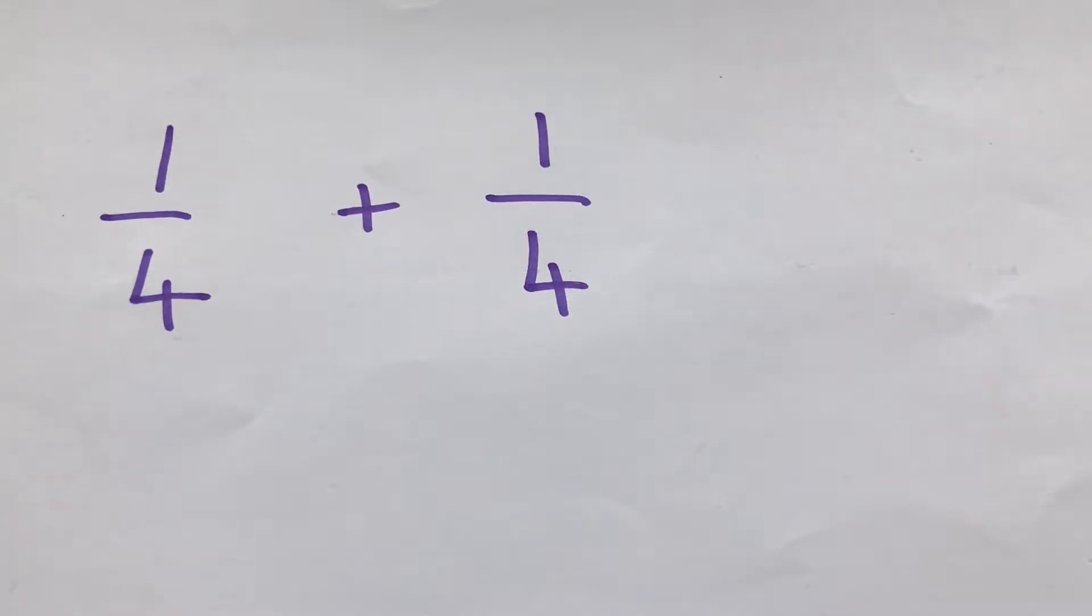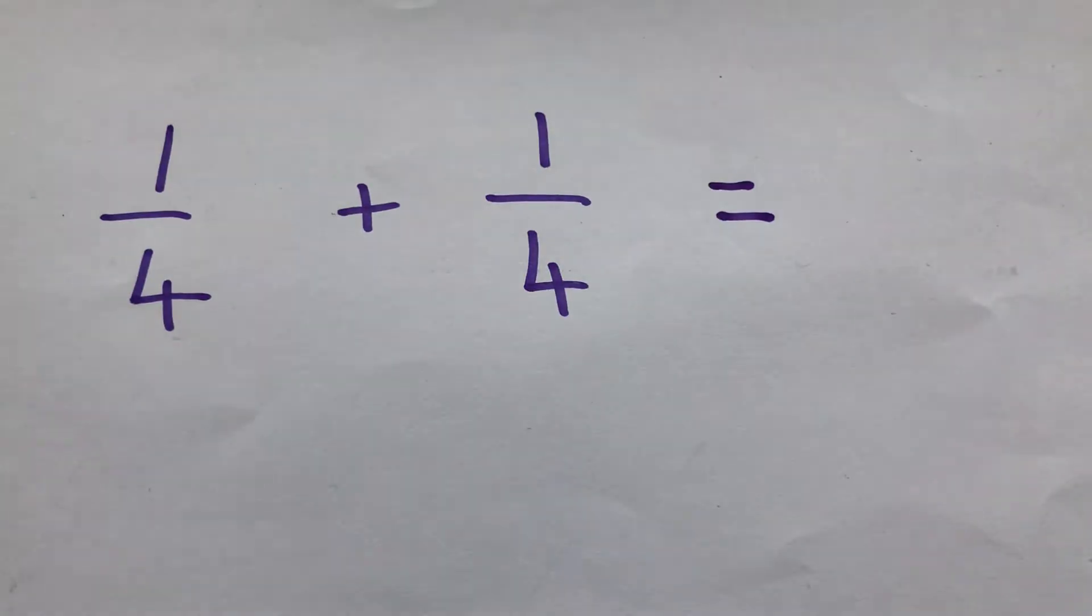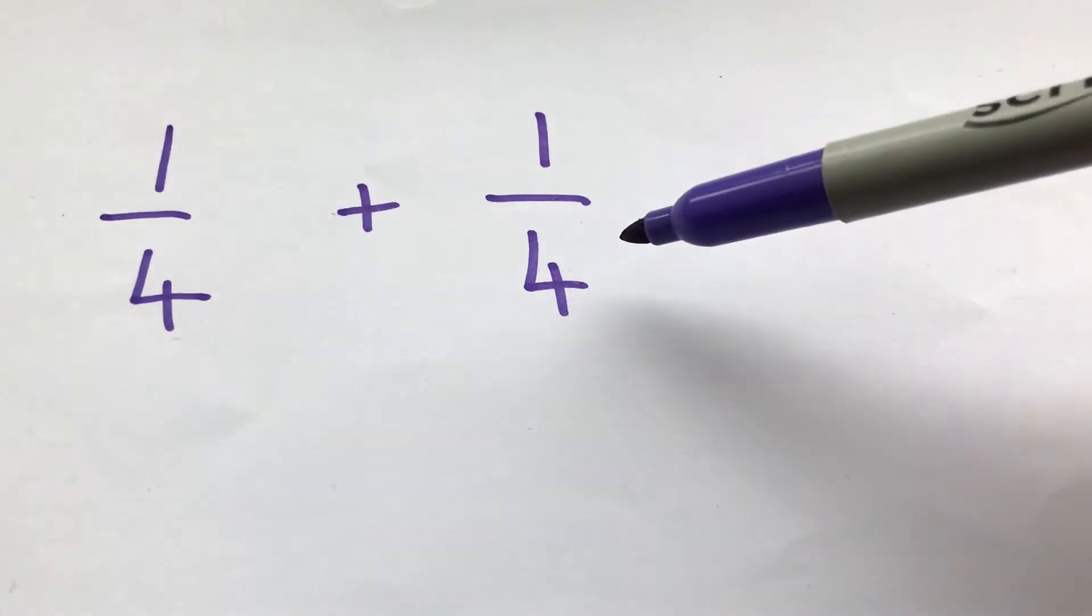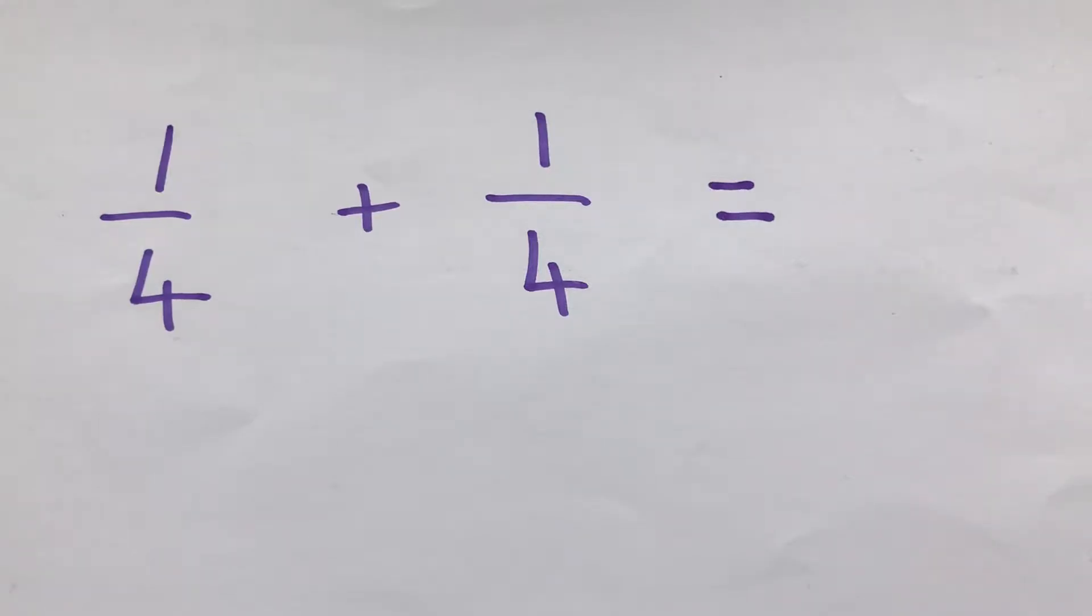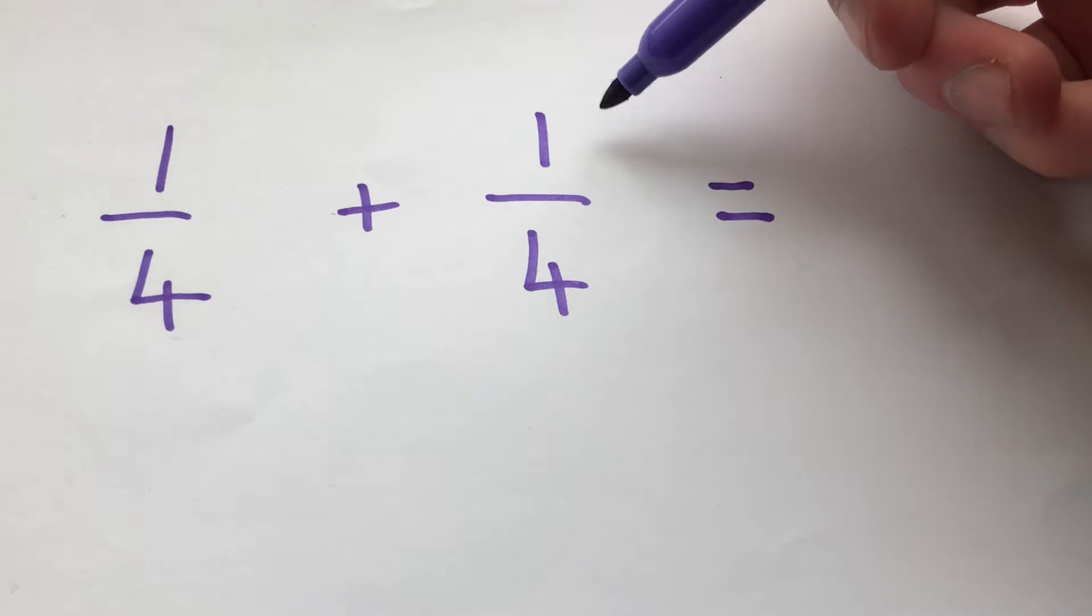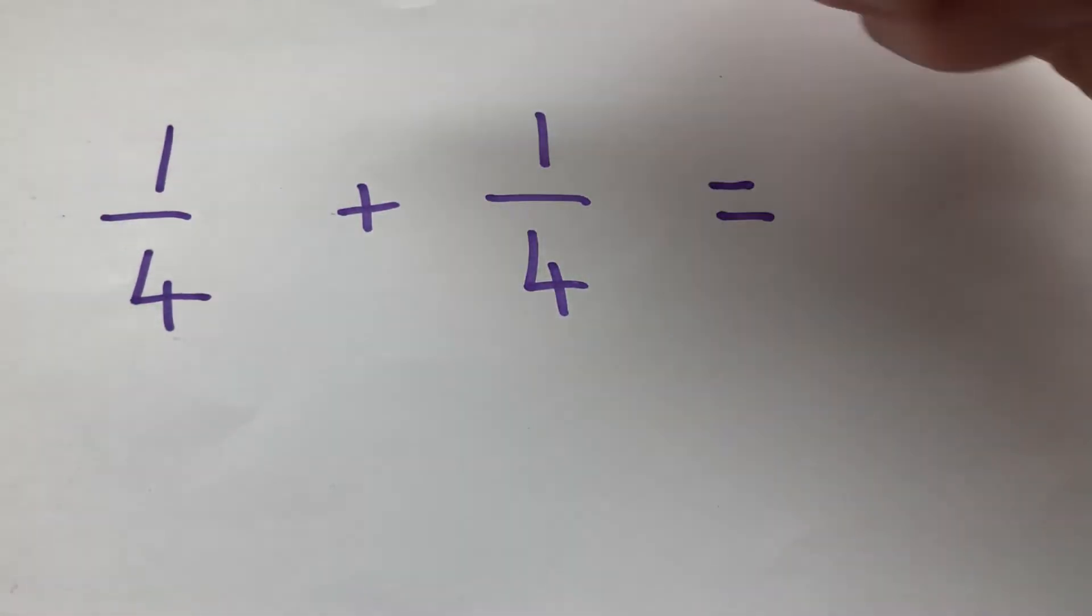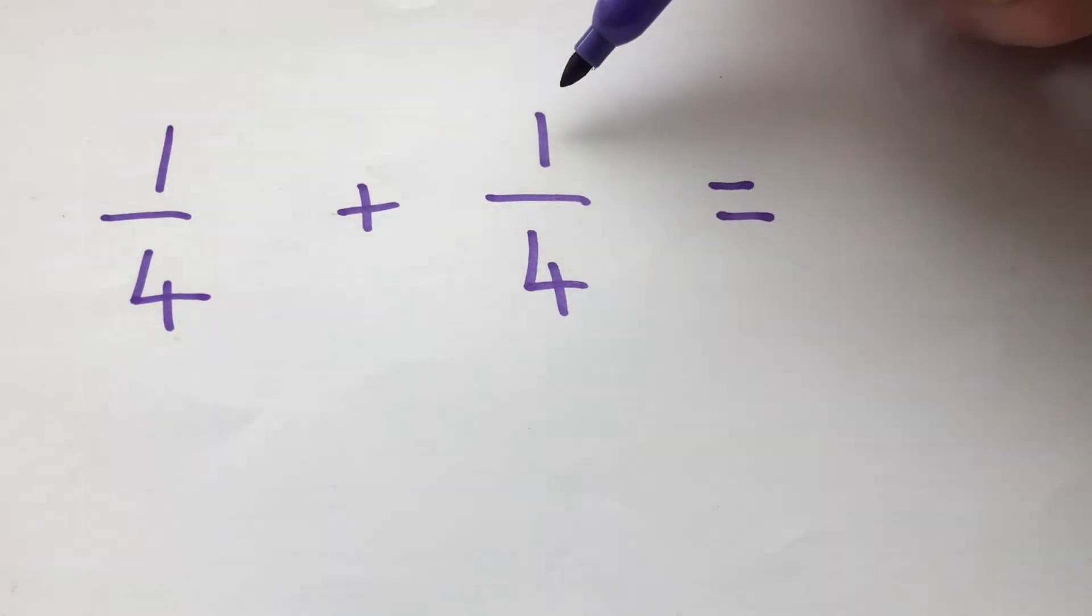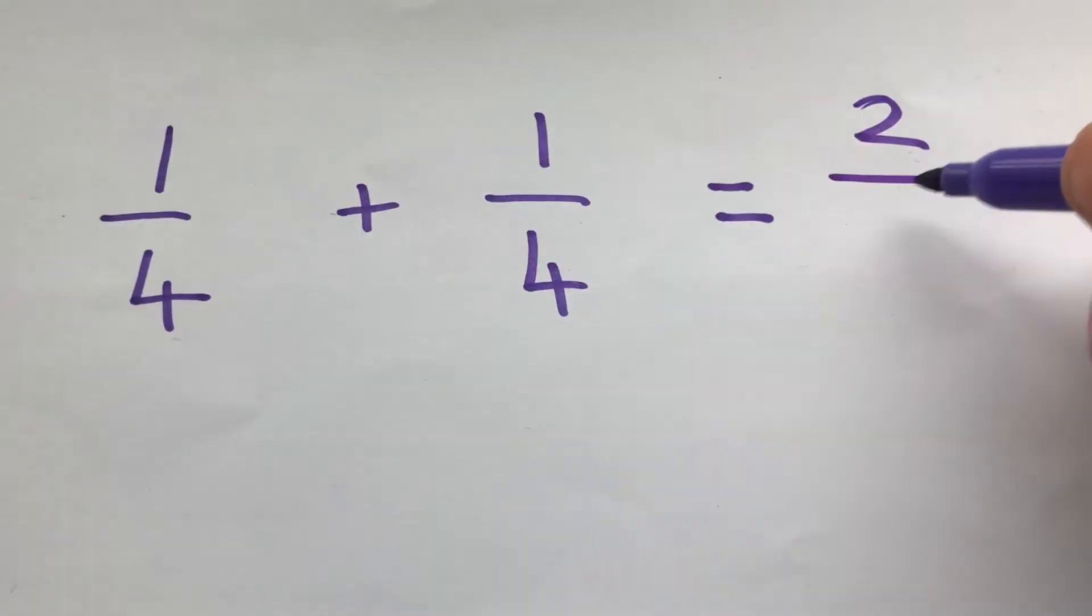So looking at our first example, one quarter add one quarter. What we do to work this out is we first of all look at the denominator here and we can see the denominators are the same. So that means we have no problem adding these together. And all we do when we add fractions is we look at the numerator, that's the number at the top, and we only add these two together, we keep the denominator the same. So our answer would be one plus one, so two, and then our denominator stays the same, two quarters.